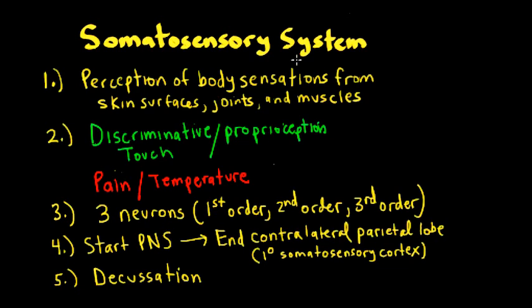All of this is based off of knowing the pathways, knowing where the information's coming in, knowing where it's going. Let's start off with just a basic definition of the somatosensory system, which is the perception of body sensations from the skin surfaces, joints, and muscles. There are two major flavors: discriminative touch, sometimes called fine touch, proprioception, joint position sense, pain and temperature, and also crude touch.